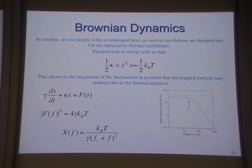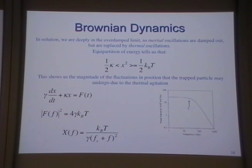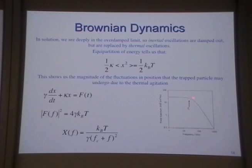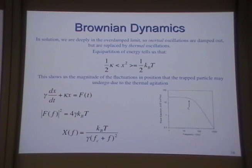Because it's so overdamped, inertia just drops — I can get rid of the mx̄̈ term, which is very small if you put the numbers in. You only get thermal oscillations. If you take the Fourier transform of the fluctuations, you can extract what's called a power spectrum — what are the fluctuations at any given frequency for this particle? From that you get a corner frequency from which you can extract the trap stiffness. This is the beauty of optical trapping: everybody can go home and do this straightforwardly with a photodiode, calibrate their trap, and know what the trap stiffness is for a given power.